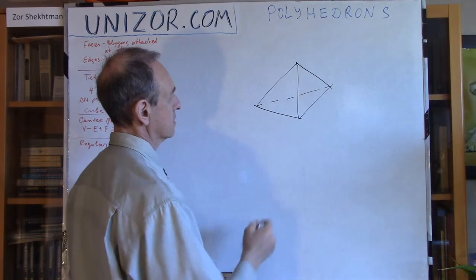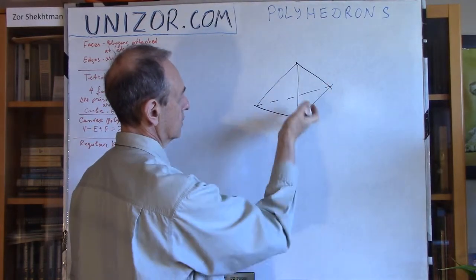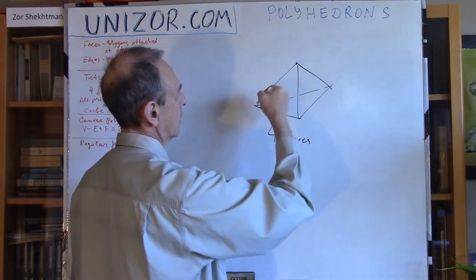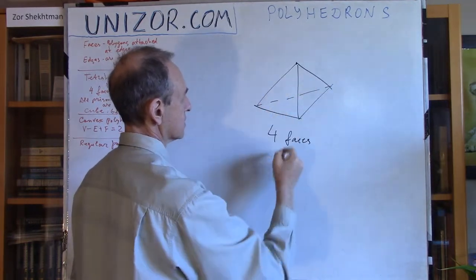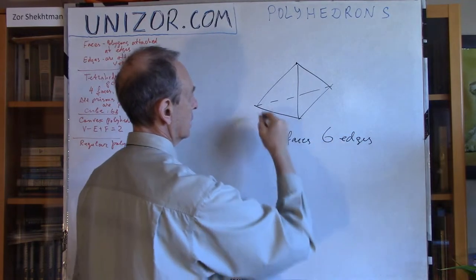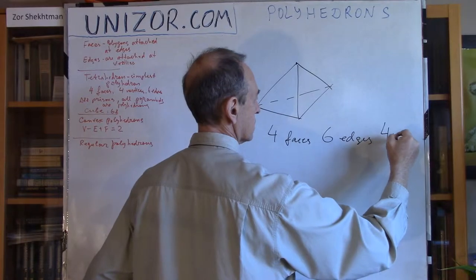Now, it has one, two, three, and four, four faces. It has one, two, three, four, five, six edges and one, two, three, four vertices.